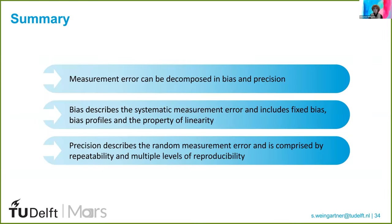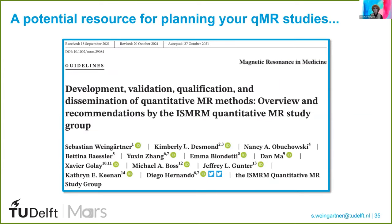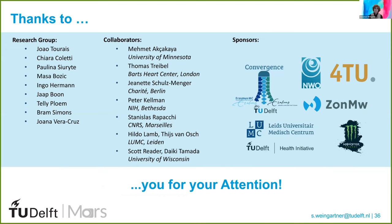I hope you've learned that measurement errors can be well decomposed into bias and precision, where bias describes the systematic error that includes fixed bias, bias profiles, and linearity, and precision describes the random error that comprises repeatability and reproducibility. Finally, I want to point you to a resource that this talk was based on, produced by the quantitative MR study group under the guidance of Diego Hernando — a great resource for your future planning of QMR studies. Thank you very much to my research group, collaborators, and sponsors, and thank you for your attention. I look forward to your questions.